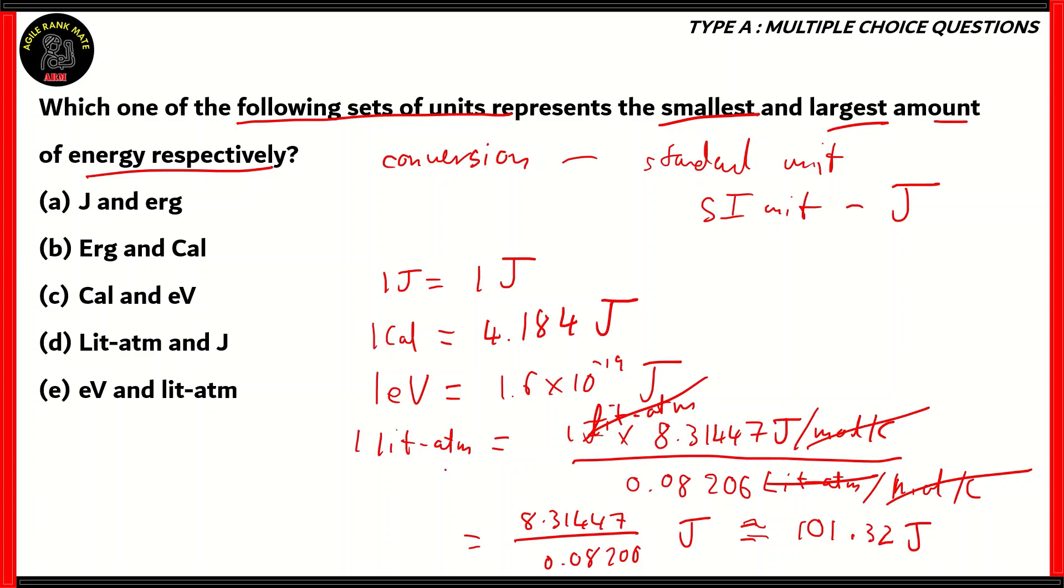Now that we know the values of all the units, except for erg, which we will find out. Since 1 erg is 10 raised to minus 7 joules, it is also quite small.